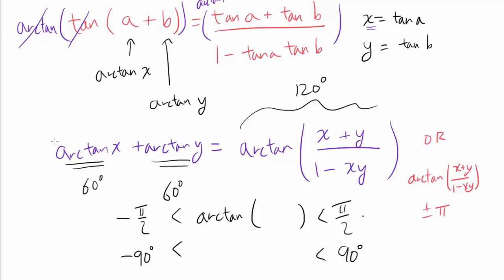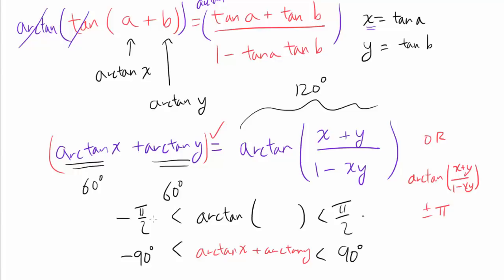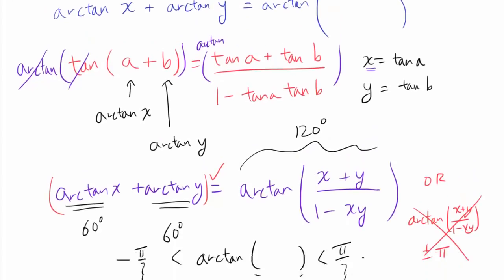The main point: if arctan(x) + arctan(y) is between −90° and 90°, the equality holds with no correction. If the sum exceeds π/2, we add π; if it's less than −π/2, we subtract π. For this particular problem, we won't need any correction factor, and I'll show you why.